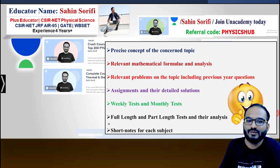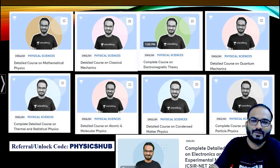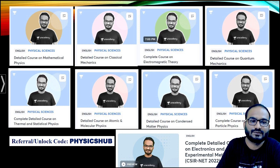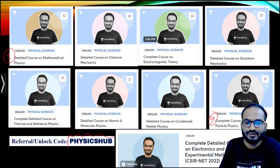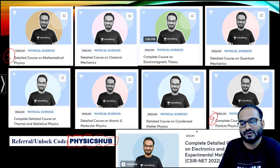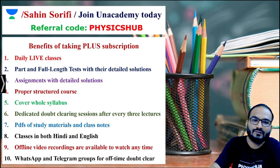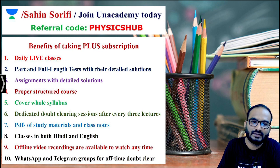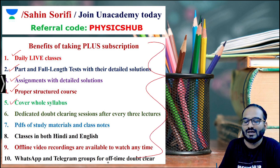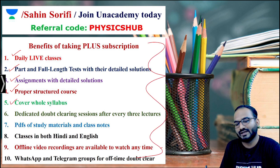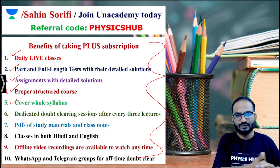This is my profile on Unacademy. If you follow this profile and visit, you will get all nine units starting from unit 1 to unit 9. You just need to take a single subscription using our referral code PhysicsHub to get the complete syllabus of CSIR-NET Physical Science. Lots of benefits: daily live classes, full length and part length tests, assignments with detailed solutions, proper structured course. Take the Unacademy Plus subscription and put your feet one step ahead toward reaching your goal.